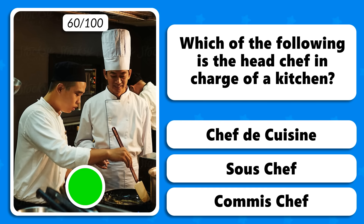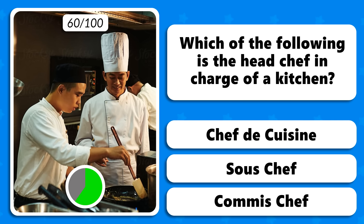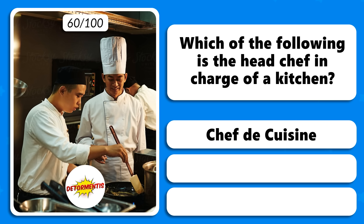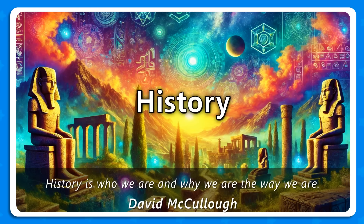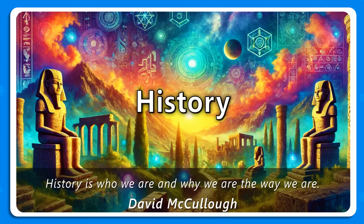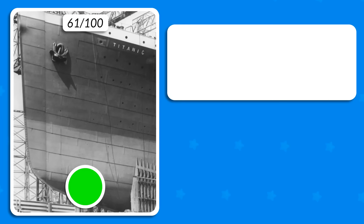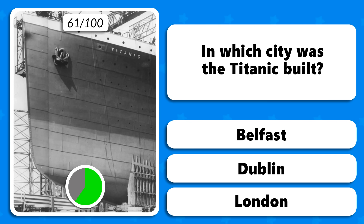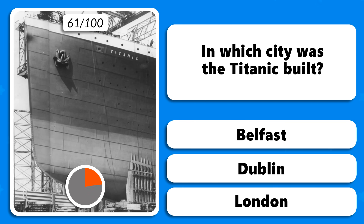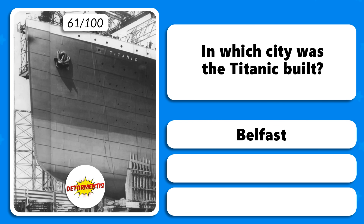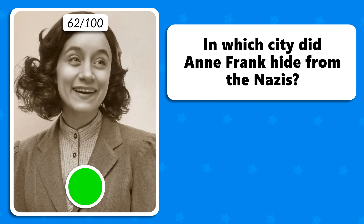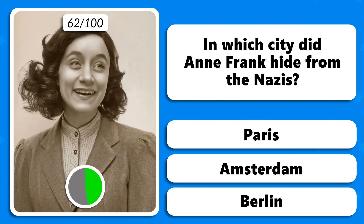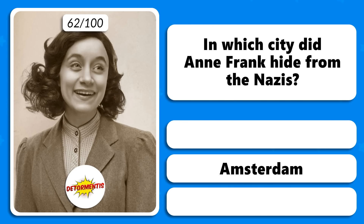Which of the following is the head chef in charge of a kitchen — a chef de cuisine, sous-chef or commis chef? A chef de cuisine. In which city was the Titanic built — in Belfast, Dublin or London? In which city did Anne Frank hide during World War II — in Paris, Amsterdam or Berlin? In Amsterdam.